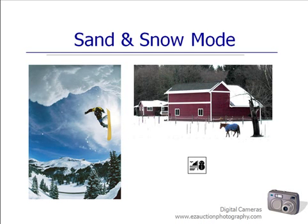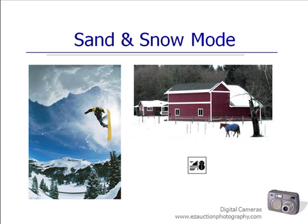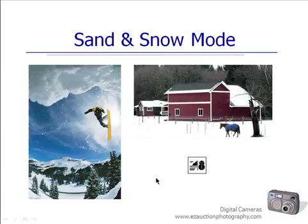What the sand and snow mode does — you may have one little icon with a snowman on a beach, or several icons like a beach, a palm tree, and a snowman — they all do essentially the same thing. Just pick the best one for your situation. It tells your camera to allow things to be slightly overexposed because it is a bright white situation. We don't want those grays.